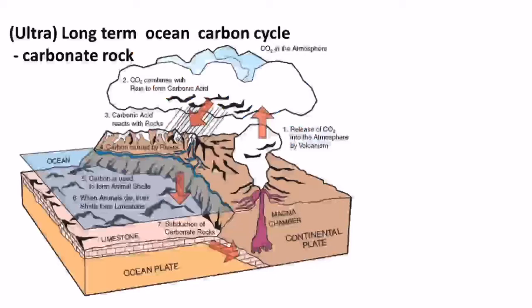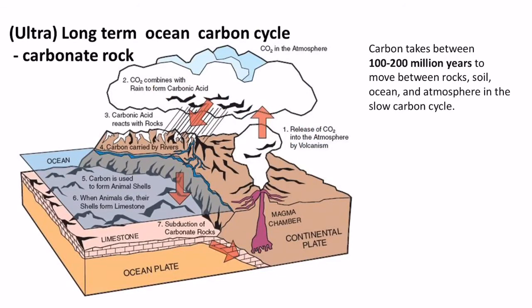Here's a brief summary in picture form of that ultra long term process. This is taking millions of years. It takes up to 200 million years to move between those four stores: from the ocean into the rocks and then back out into the atmosphere and around again. That slow carbon cycle can take 100 to 200 million years.